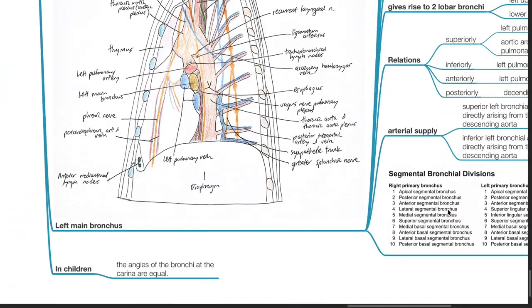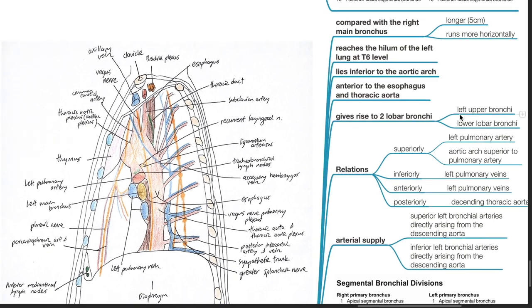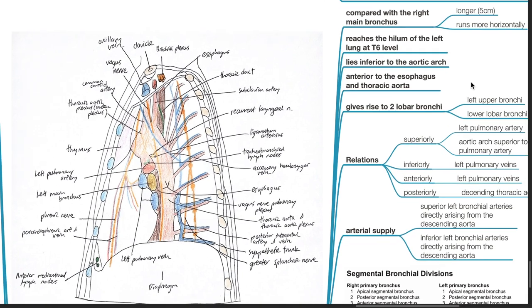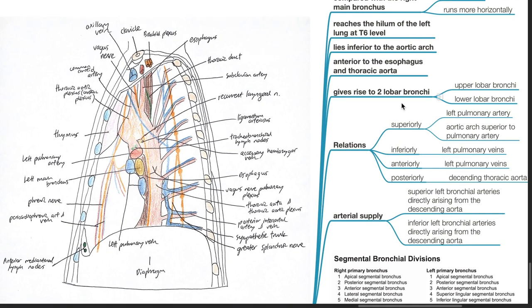Left main bronchus. Compared with the right main bronchus, it is longer at 5 cm and runs more horizontally. It reaches the hilum of the left lung at the T6 level. It lies inferior to the aortic arch, anterior to the esophagus and the thoracic aorta, and gives rise to two lobar bronchi: the upper lobar bronchus and the lower lobar bronchus. Relations superiorly: the left pulmonary artery, and the aortic arch superior to the pulmonary artery.